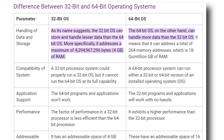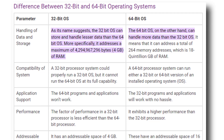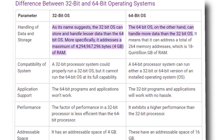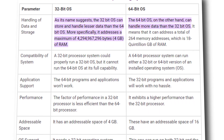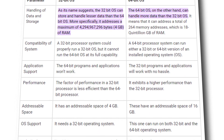Now let's move to application support, which is an important factor. 64-bit programs and applications will not work on a 32-bit system, but 32-bit programs and applications will work on a 64-bit system with no hassle. Regarding performance, a 32-bit processor is less efficient than a 64-bit processor.